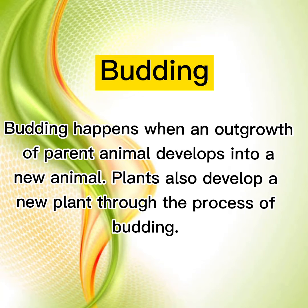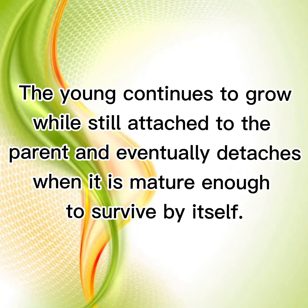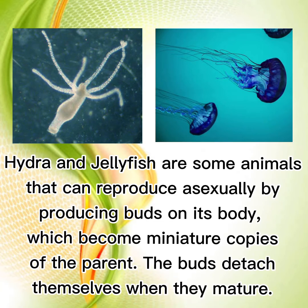Plants also develop a new plant through the process of budding. A bulge appears on the parent's body, grows into a bud, and eventually becomes a miniature copy of the parent. The young continues to grow while still attached to the parent and eventually detaches when it is mature enough to survive by itself. Hydra and jellyfish are some animals that can reproduce asexually by producing buds on their body, which become miniature copies of the parent. The buds detach themselves when they mature.